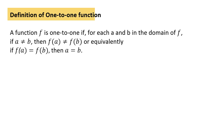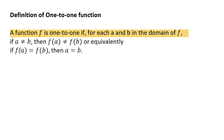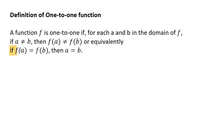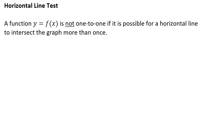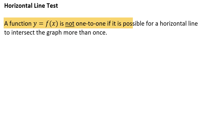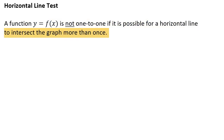Now let's talk about the formal definition of a one-to-one function. A function f is a one-to-one function if, for each a and b in the domain of f, if a doesn't equal b then f(a) doesn't equal f(b) — or equivalently, if f(a) equals f(b) then a equals b. Remember, the vertical line test will tell us if we have the graph of a function or not. The horizontal line test applies to the graph of a function y = f(x): it is not the graph of a one-to-one function if it's possible for a horizontal line to intersect the graph in more than one place.